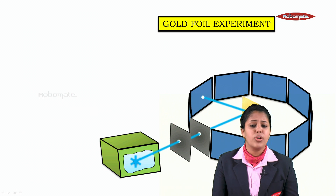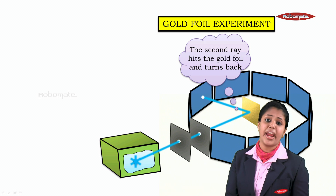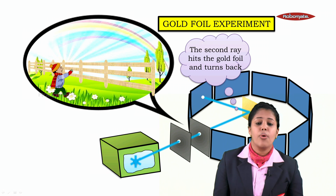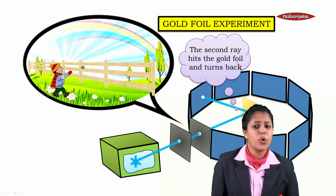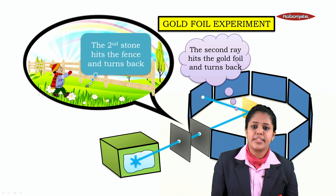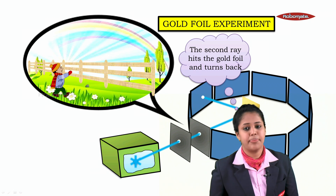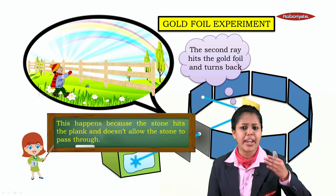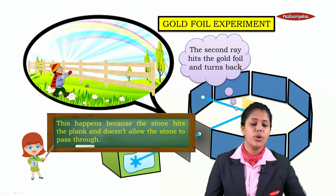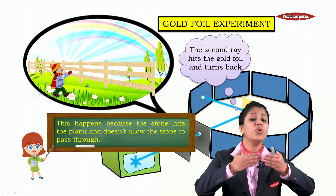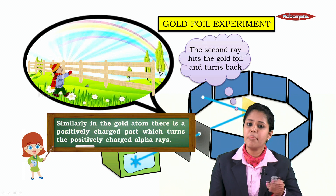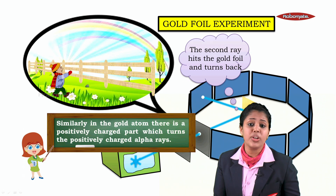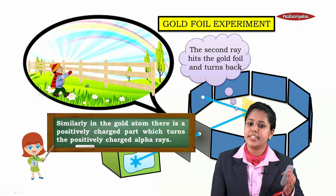Now, the second ray hits the gold sheet and turns back. Again, imagine standing in front of a fence and throwing a stone — the second stone hits the plank and turns back. Why? Because the plank does not allow the stone to pass through. Similarly, in the gold atom, there is something not allowing the alpha rays to pass — that is a positively charged part which turns the positively charged alpha rays back.